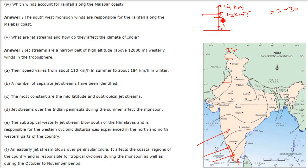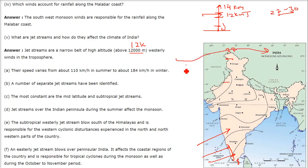Jet streams are not at ground level — they are around 12 km above our heads. Their speed varies from about 110 km/h in summer to about 184 km/h in winter.